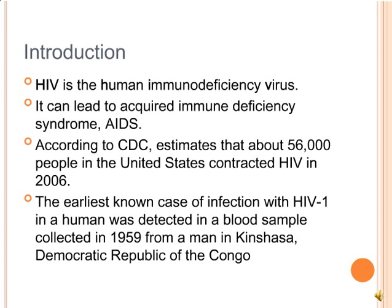To start with the introduction, HIV is a human immunodeficiency virus. It can lead to acquired immune deficiency syndrome, AIDS. According to the CDC, it is estimated that about 56,000 people in the United States contracted HIV in 2006. The earliest known case of infection with HIV-1 in a human was detected in a blood sample collected in 1959 from a man in Kinshasa.